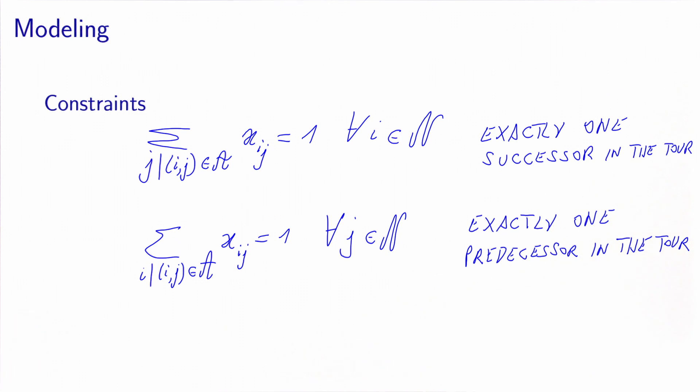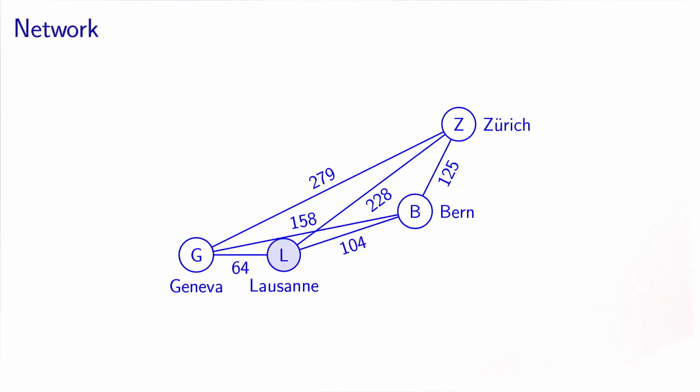However, they are not sufficient to model the problem completely. In order to understand why, let's look at an example. Here I have four cities: Lausanne, Geneva, Bern, and Zurich. I have a link between each pair of cities associated with the length in kilometers separating the two cities. The salesman lives in Lausanne and needs to visit the three other cities before coming back to Lausanne by making the least possible number of kilometers.